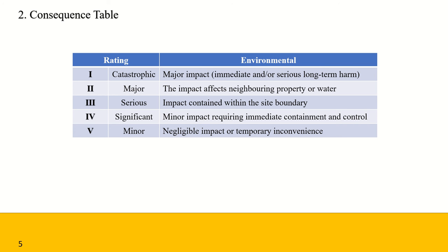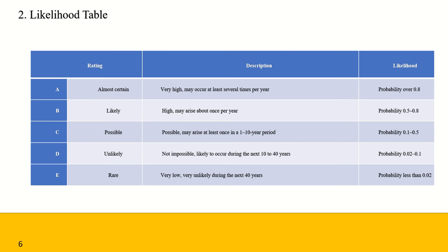For example, 'catastrophic' would be considered as a major impact of a series of long-term harm. Generally, you should carefully review the consequence scales you intend to use for each project to ensure they reflect the organization's objectives and criteria for success, as these scales define the window of consequence levels.